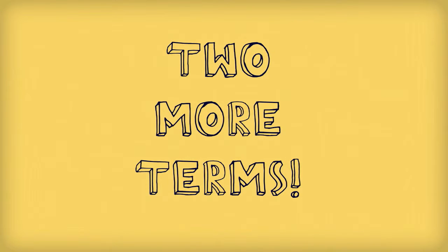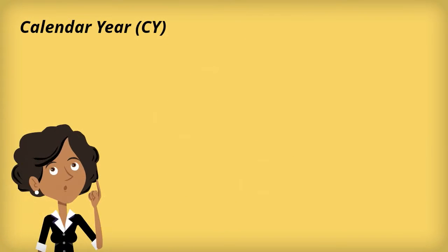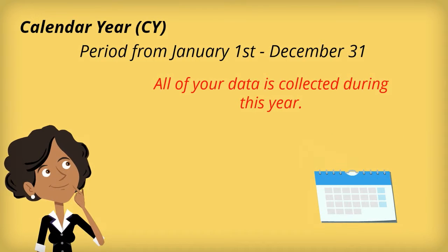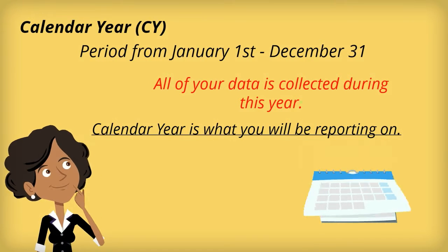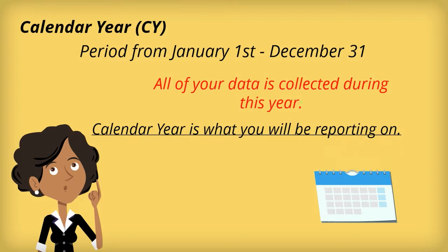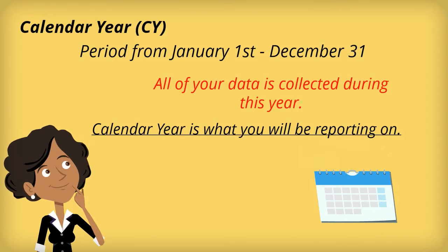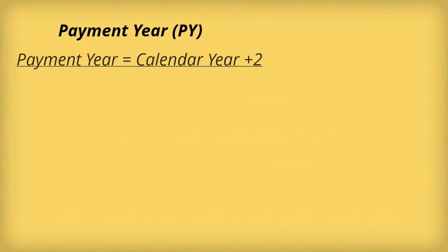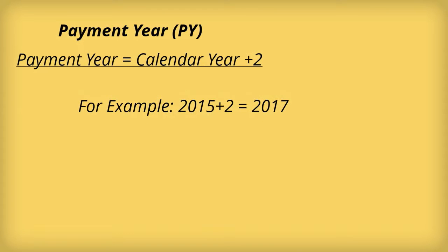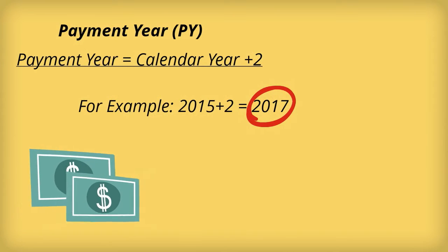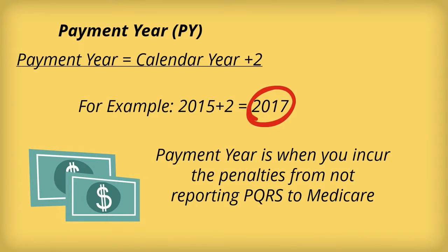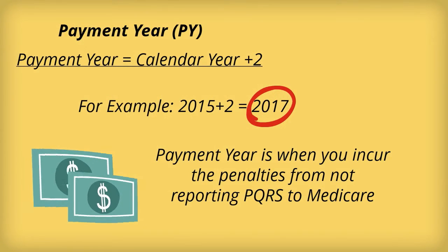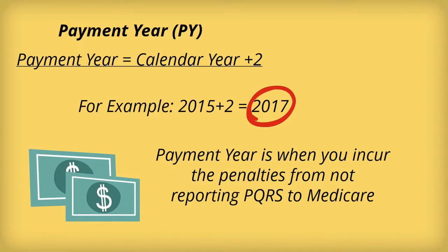There are two more terms you'll see a lot of during the PQRS process. The first is calendar year, or CY — the period from January 1st through December 31st of the current year. For example, this year is calendar year 2015. You'll collect data during the calendar year, and this is what your future penalties are based on. The next is payment year, or PY. Payment year is calendar year plus two — for example, 2015 plus two is 2017. Payment year is when you'll incur any penalties assessed on each paid Medicare or Medicare plan claim from not reporting PQRS.